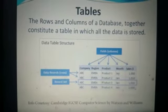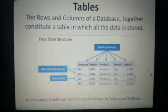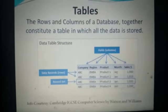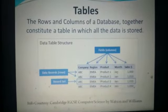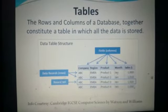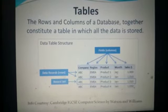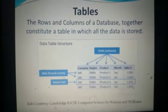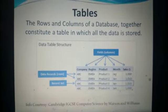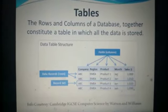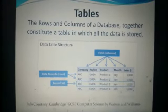A complete database table looks like this. It contains rows which are horizontal, and it contains fields that are vertical.